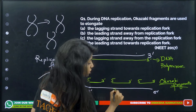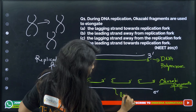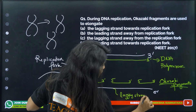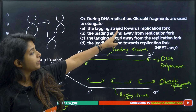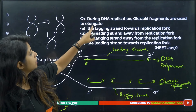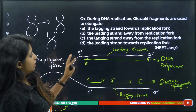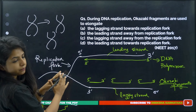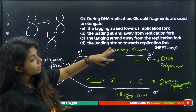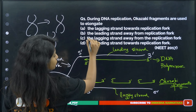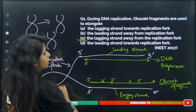The strand that lags in the process of replication, where Okazaki fragments are formed, you call this the lagging strand. The strand that does replication continuously is called the leading strand. So during DNA replication, Okazaki fragments are used to elongate the lagging strand away from the replication fork. That is the correct answer.